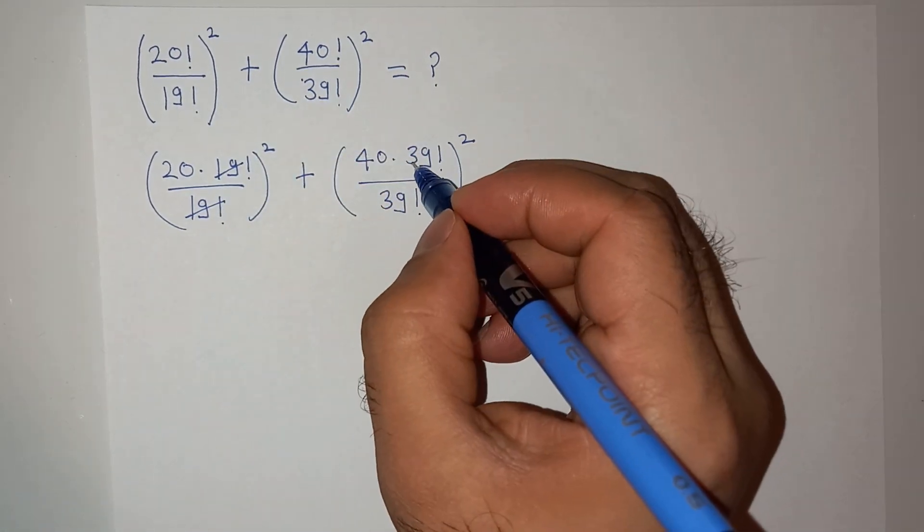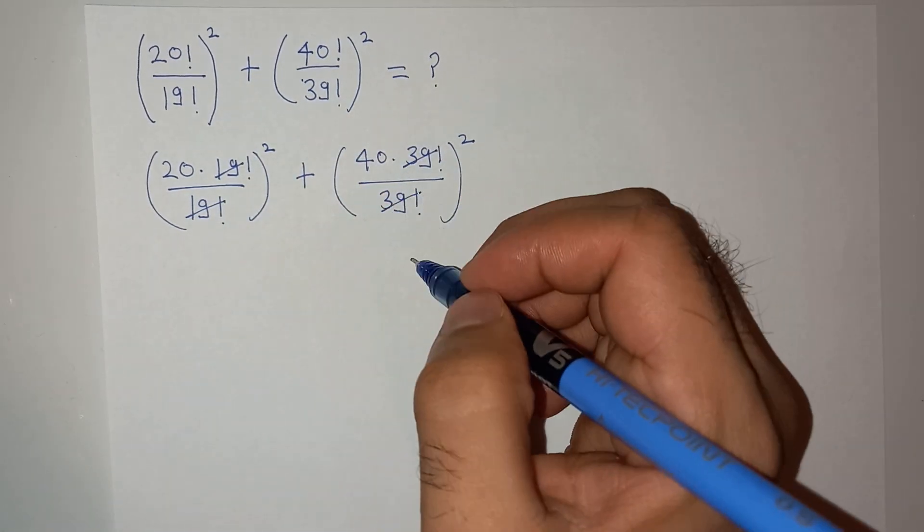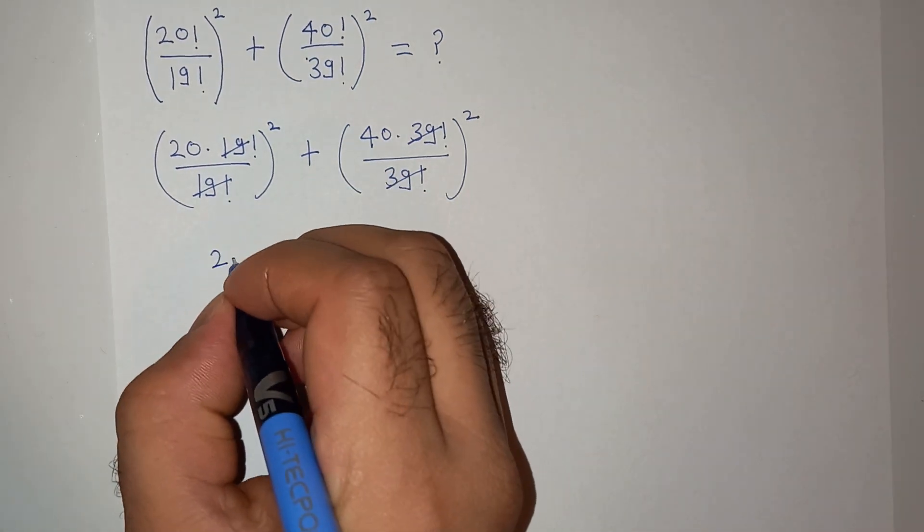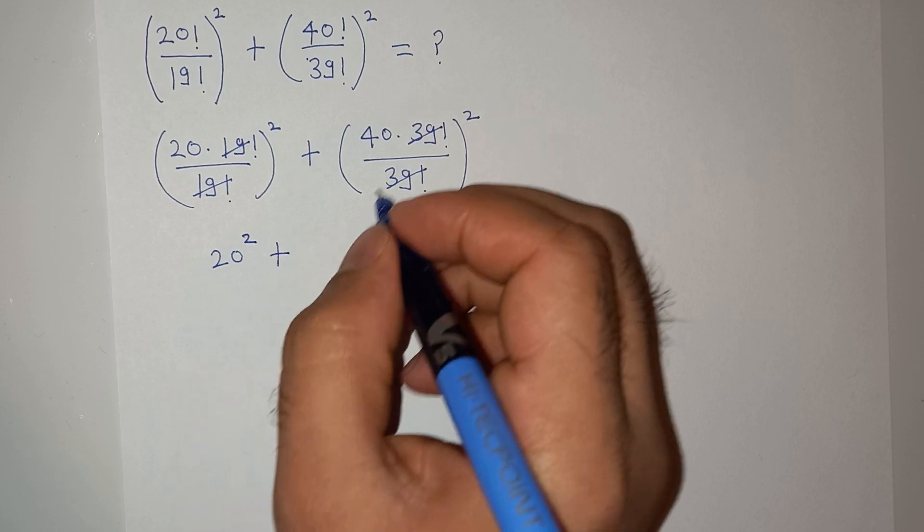This 19 factorial and 19 factorial will cancel, and this 39 factorial and 39 factorial will cancel, so we are left with 20 square plus 40 square.